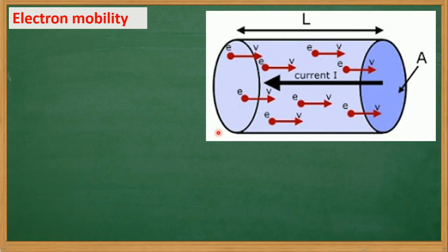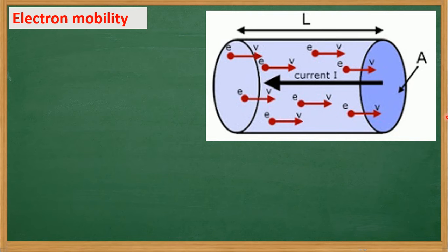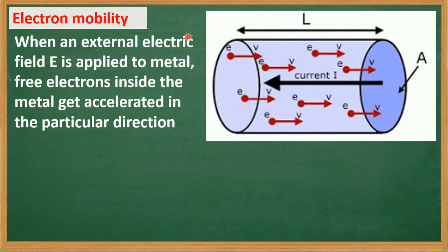Consider this diagram. This is a piece of a conductor through which electricity is passing. The area of cross-section of this conductor is A and the length of the conductor is L. This red solid dot is actually an electron and V is its velocity. This is the direction of current. When an external electric field E is applied to a metal, free electrons inside the metal get accelerated in a particular direction.